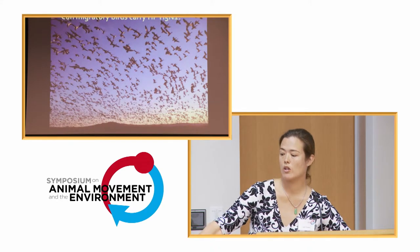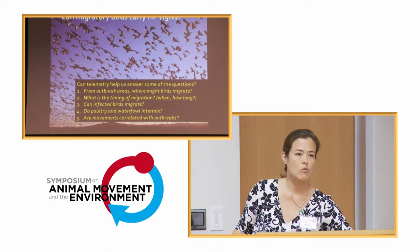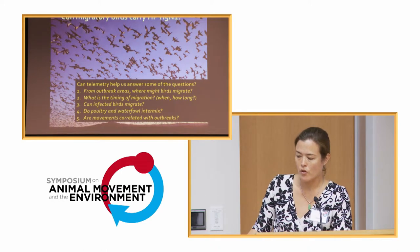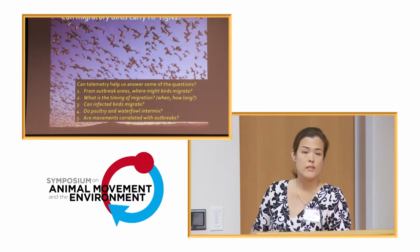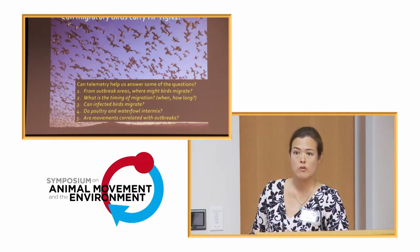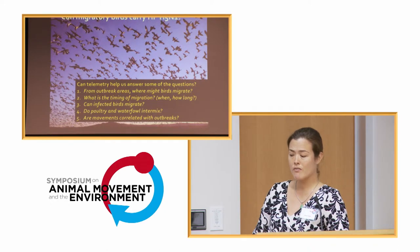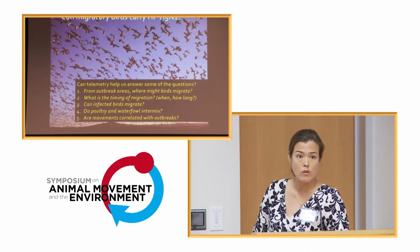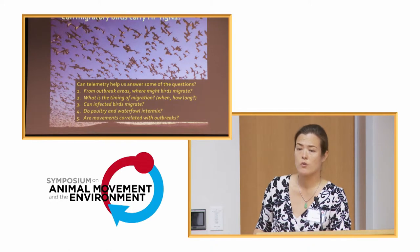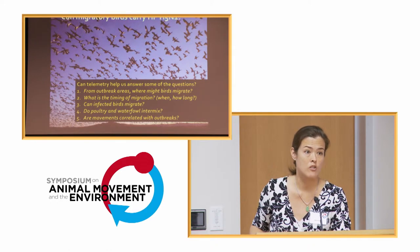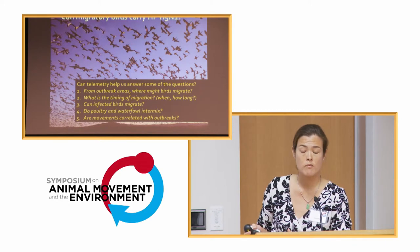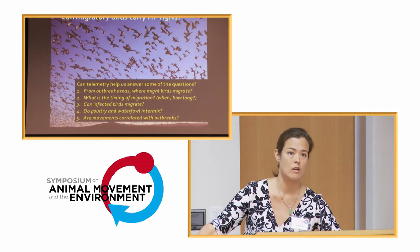Some of the key questions we wanted to answer are: what is the involvement of wild birds in the spread of highly pathogenic avian influenza, and how can telemetry help us? Specifically: from outbreak areas, where might these birds migrate? What is the timing of their migration, when do they leave, how long does it take, where are their stopover locations, how long do they stay there, can infected birds migrate, do poultry and waterfowl intermix, and are movements correlated with outbreaks? When we started this work in 2005-2007, there was almost no information on the ecology of wild birds in Asia - we were starting almost at ground zero.